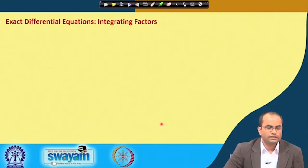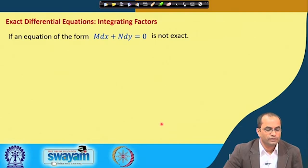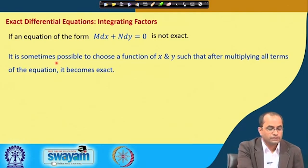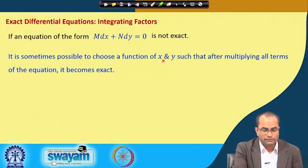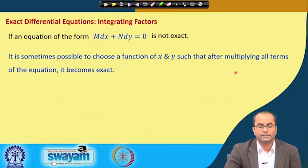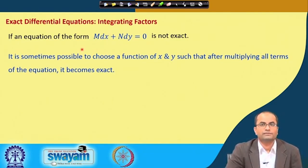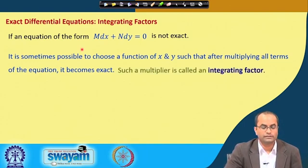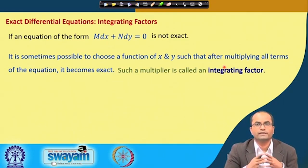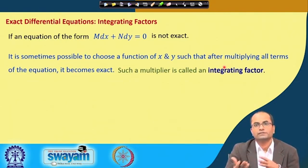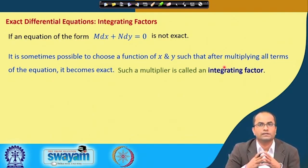Now, what is to be done when the given equation is not exact? If an equation of the form M dx plus N dy is not exact, it is sometimes possible to choose a function of x and y such that after multiplying all the terms of the equation, the equation becomes exact. Such a multiplier is called the integrating factor — a function of x and y after multiplication to the given differential equation makes it exact.